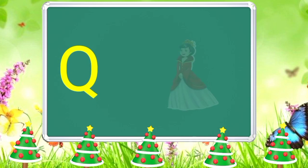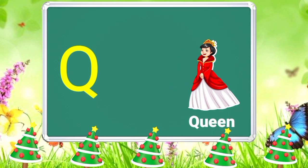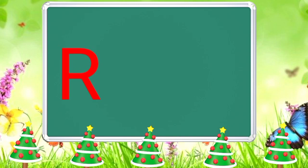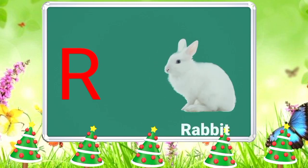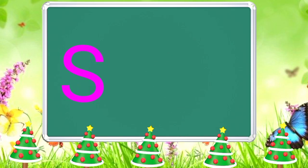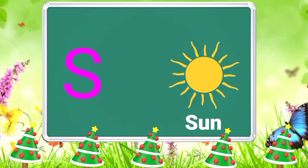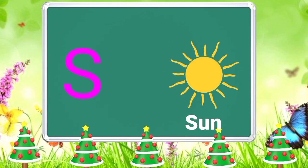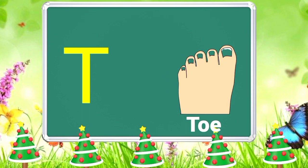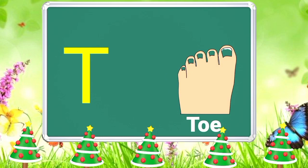Q is for Queen, Q-Q-Queen. R is for Rabbit, R-R-Rabbit. S is for Sun, S-S-Sun. T is for Toad, T-T-Toad.